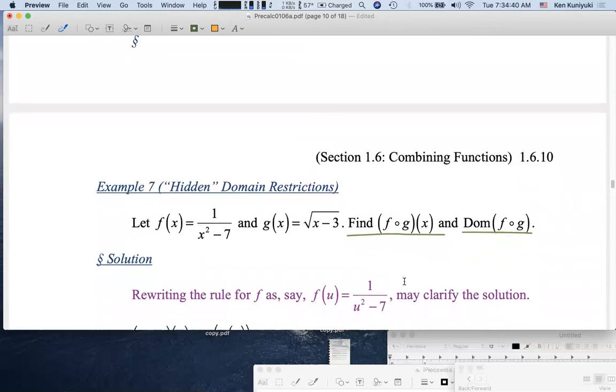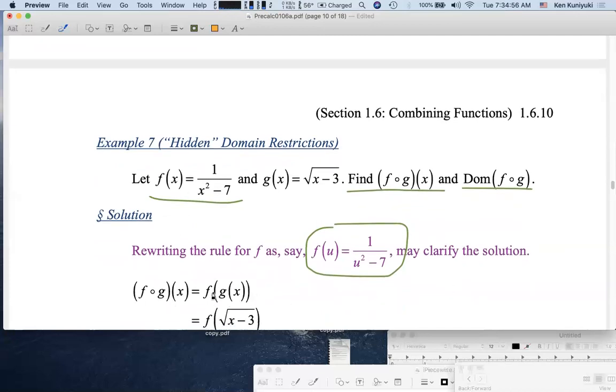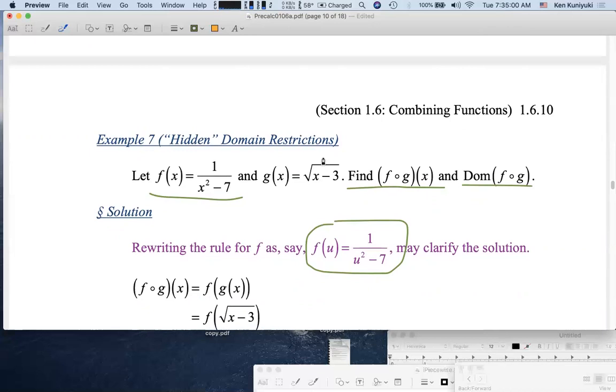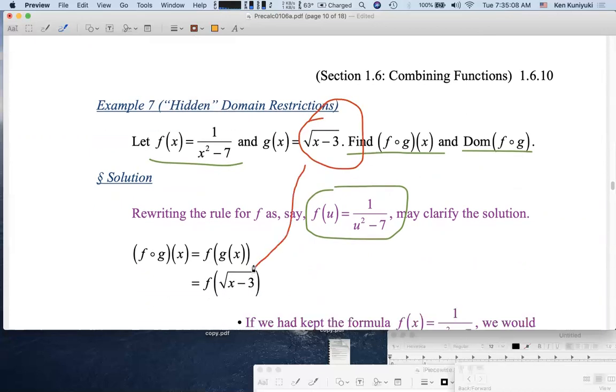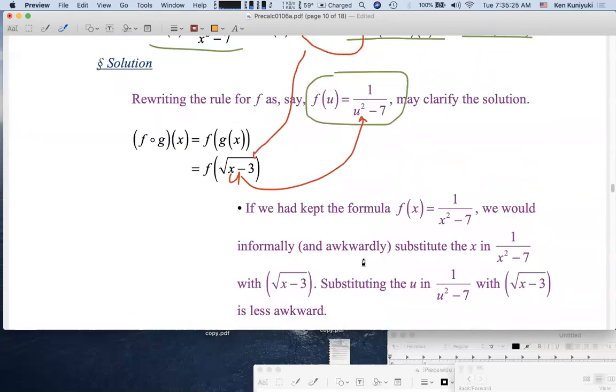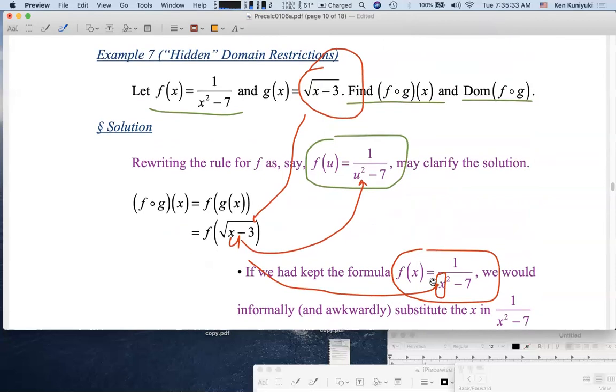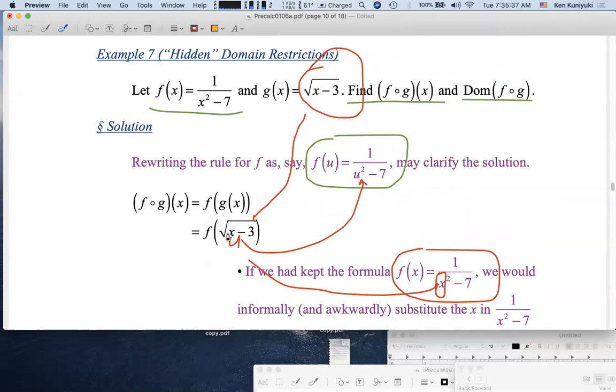Alright, now first of all it might actually be to your benefit if you rewrite this rule as f(u) equals 1 over (u squared minus 7), because some people are going to find it weird to plug in something in for x. (f ∘ g)(x) is f(g(x)). g(x) is the square root of x minus 3. I'll put that in red. The square root of x minus 3 goes in here. And what is f of root x minus 3? Well, substitute this in for u here. This is u, the input, the argument to f. You put that in for u here. Or if you just leave in terms of f(x), you plug this in for x, but that seems kind of weird. In any case, you get 1 over this thing squared minus 7.